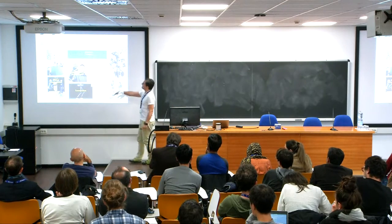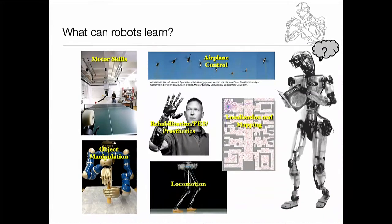We've started bringing learning into a variety of areas. It's not like there hasn't been learning — we've been learning basic motor skills, learning in object manipulation, there's a lot of learning at the rehabilitation and prosthetics level, at airplane control. People have learned pretty heavy helicopter acrobatics. Things like SLAM — localization and mapping — is a classic learning application, so is robot locomotion. And we all want to bring it to the humanoid.